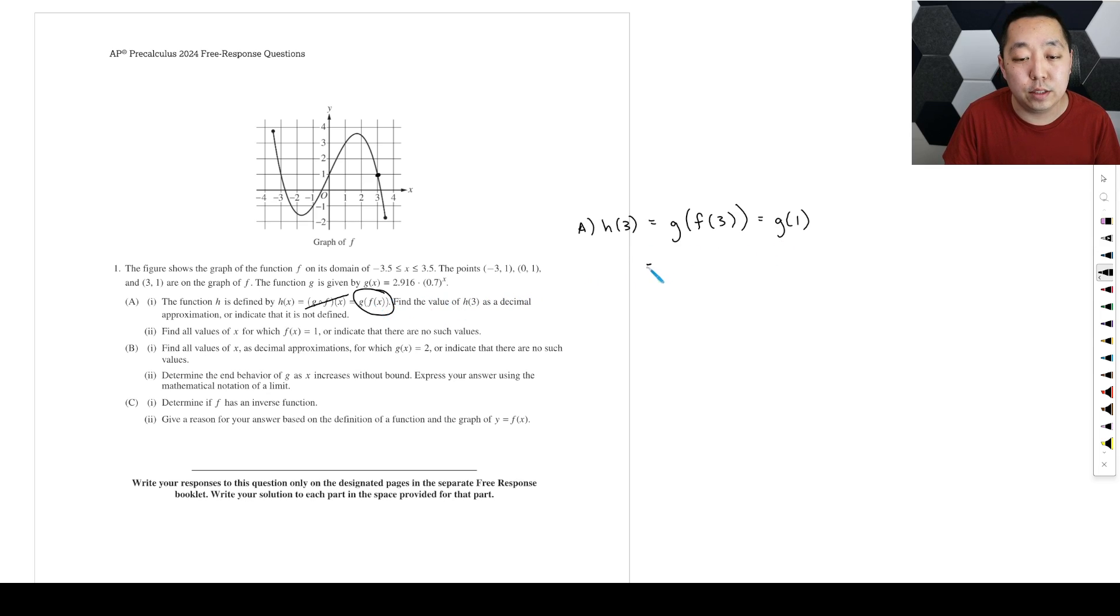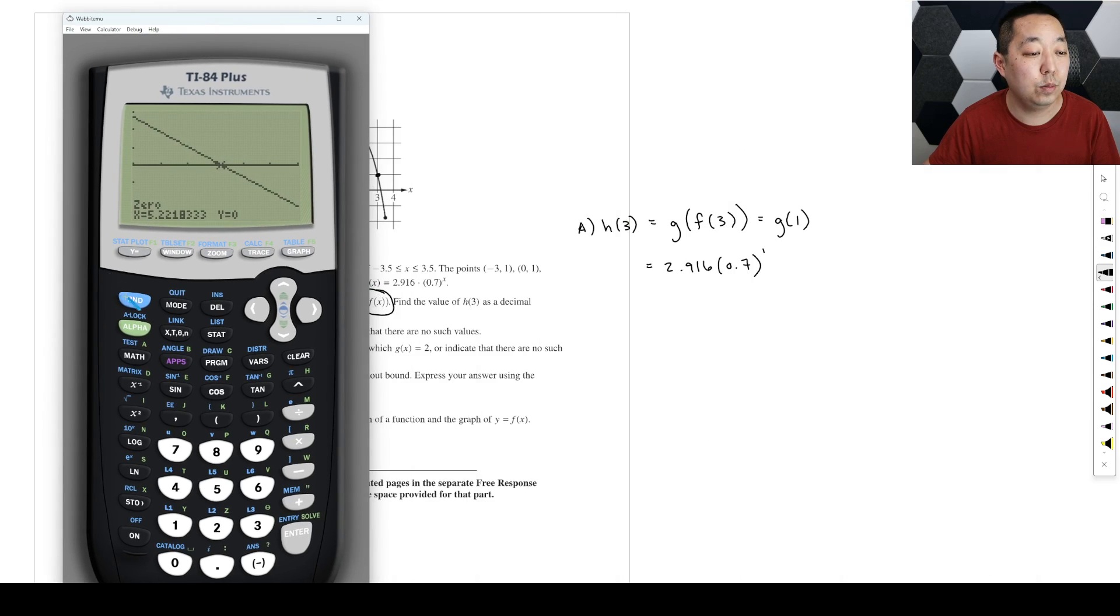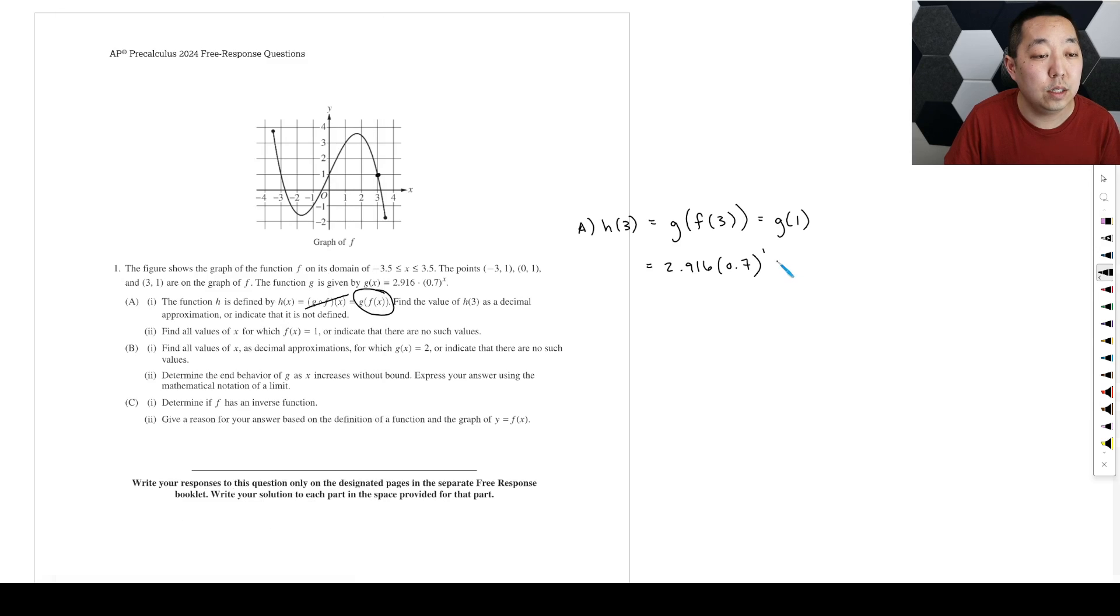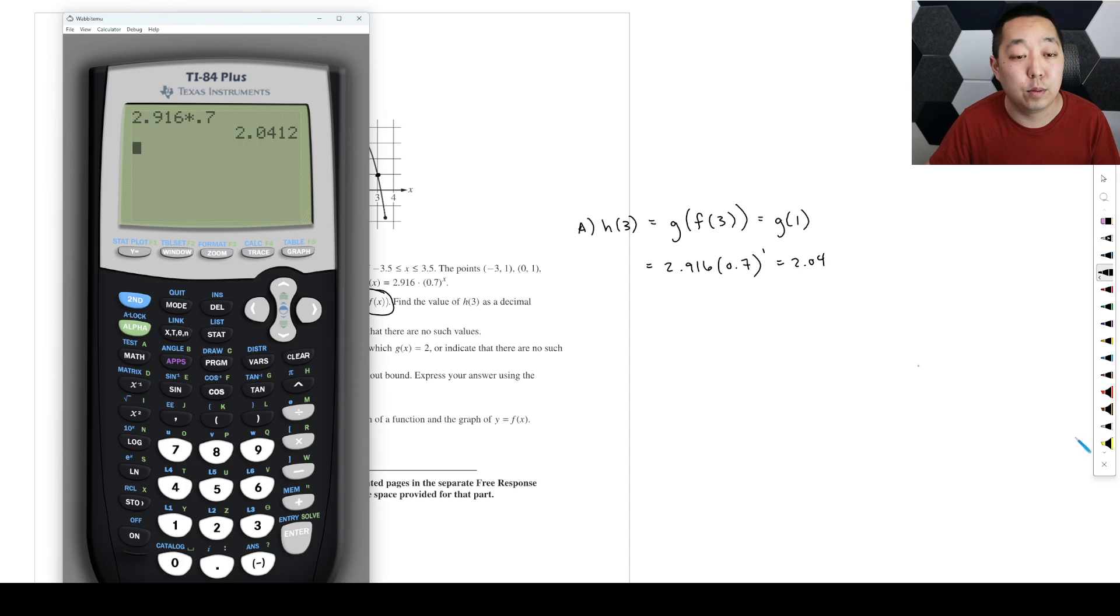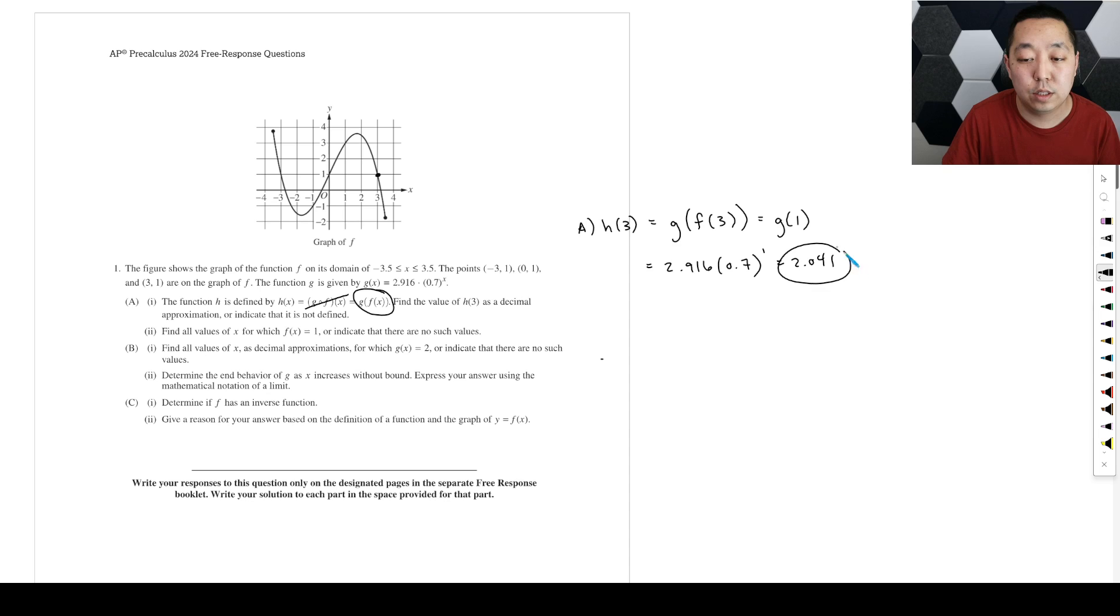So this is G of 1. How do we handle G of 1? Well, to do that, we're going to plug this into our calculator, 2.916, 0.7 to the first power. And let me double check. I think this is a calculator question. Yes, it is a calculator question. So I'm going to pull this up. We'll do 2.916 times 0.7, just to the first power, right? Because it's 1. So that gives me 2.04, and 3 decimal places is normally how we round these things. 2.041.